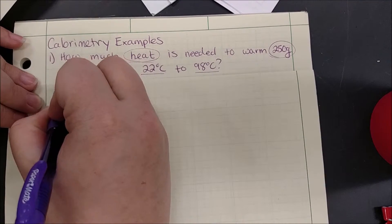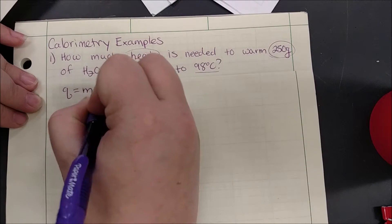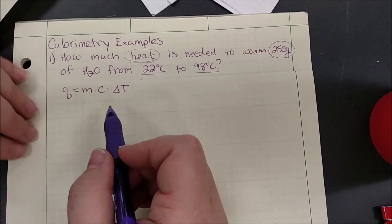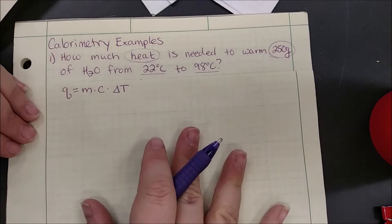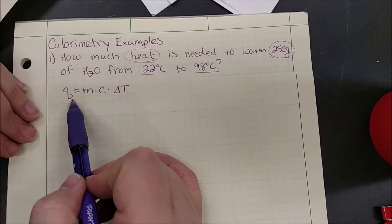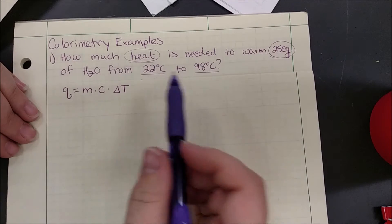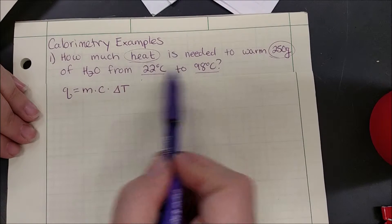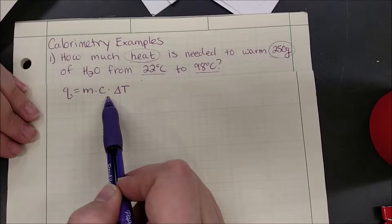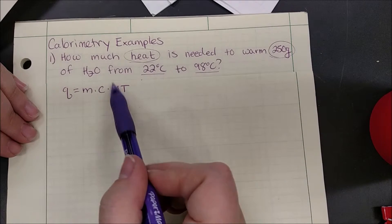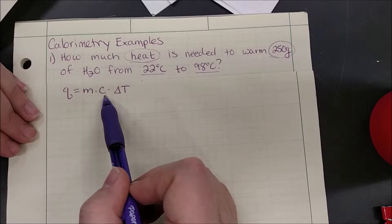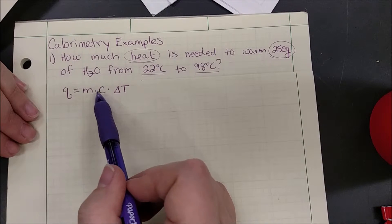We are going to be using our Q equals MC delta T equation — we call this the specific heat equation or the calorimetry equation. Looking at our question, we are looking for Q. We are given our mass and values to find our change in temperature. The specific heat may not always be directly given, but since this is water, we found water's specific heat in class. The specific heat stays the same for that chemical.